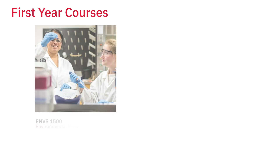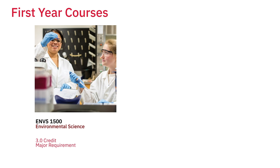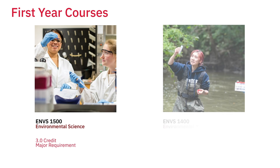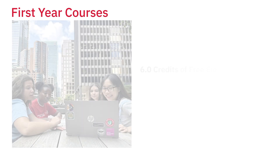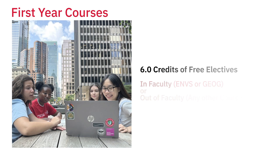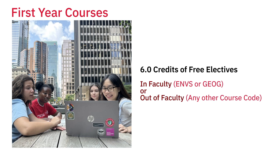Now, for courses that count towards your major, the SEM program requires you to take MBS 1500, Environmental Science, and MBS 1400, Environmental Management. With all of these required courses for your first year out of the way, you have the room to take up to six credits of free electives, which can be taken within the Faculty of Environmental and Urban Change or outside of the Faculty.